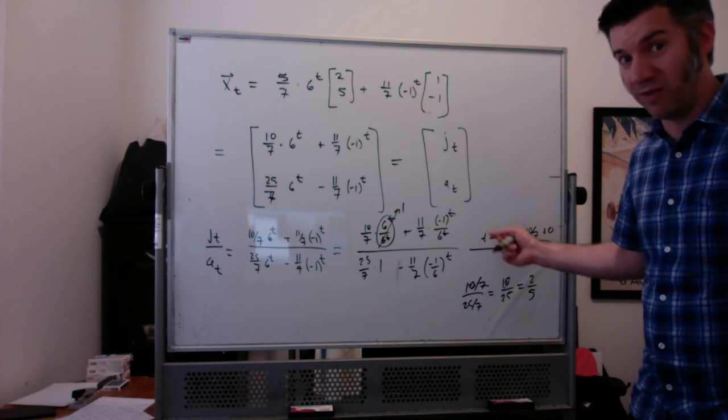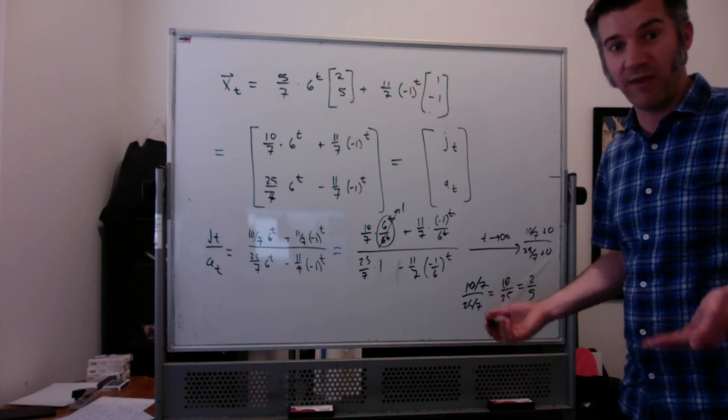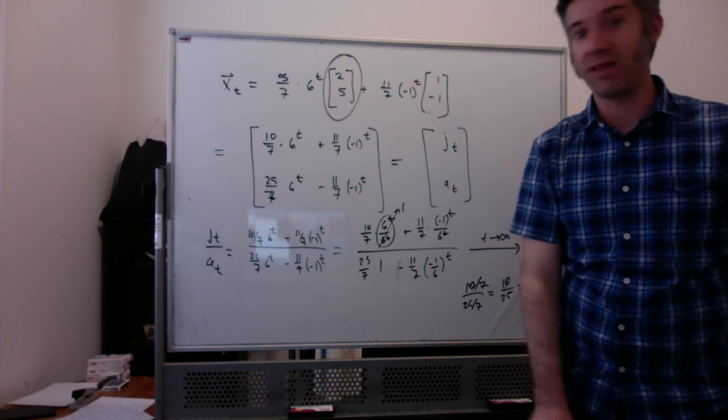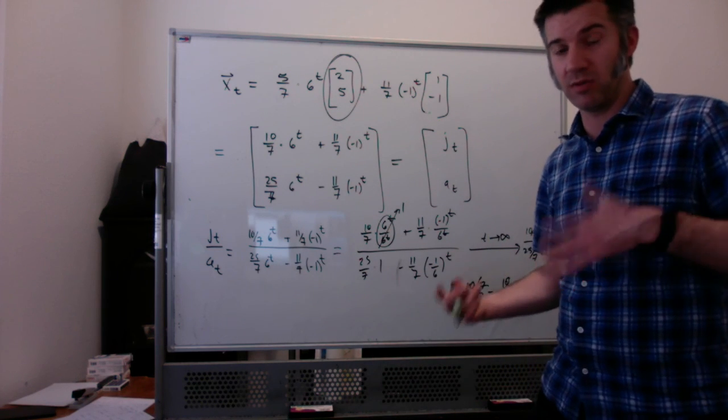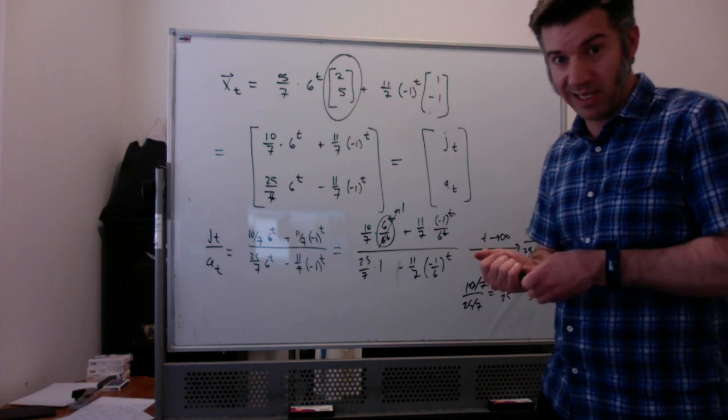So the ratio of juveniles to adults is 2 juveniles to 5 adults, just like we found from the eigenvector. That's why the eigenvector that goes with the bigger eigenvalue is the one that tells you the stable age distribution, because the other one ends up not mattering at all. That's it.